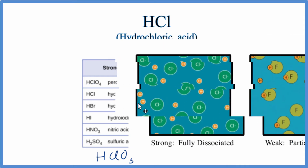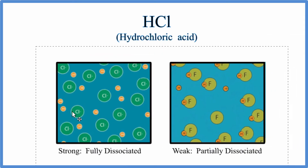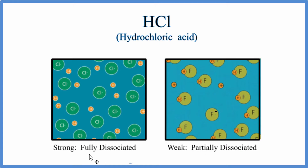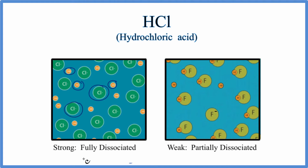What that means is if we put hydrochloric acid in water, it's going to dissociate fully — it's going to break apart into its ions. So the hydrogen and the chlorine will have these hydrogen ions; they'll all be separate, and the chloride ions will be separate. It's dissociated fully.